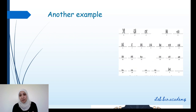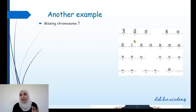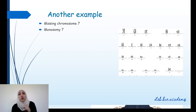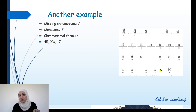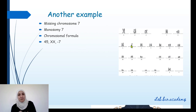In another karyotype example, there is a missing chromosome 7. This abnormality is called monosomy — 'mono' means one — so monosomy 7 means one chromosome 7 instead of two. For the chromosomal formula: count the total number of chromosomes, which is 45, put a comma, look at the gonosomes — XX — another comma, then write -7 because one chromosome 7 is missing: 45,XX,-7.